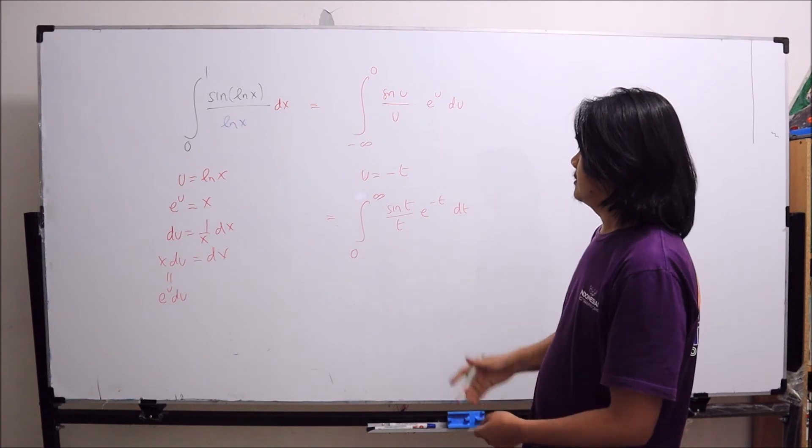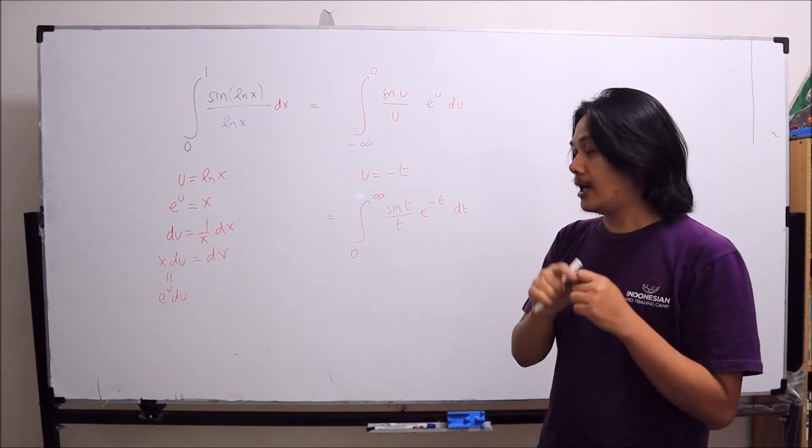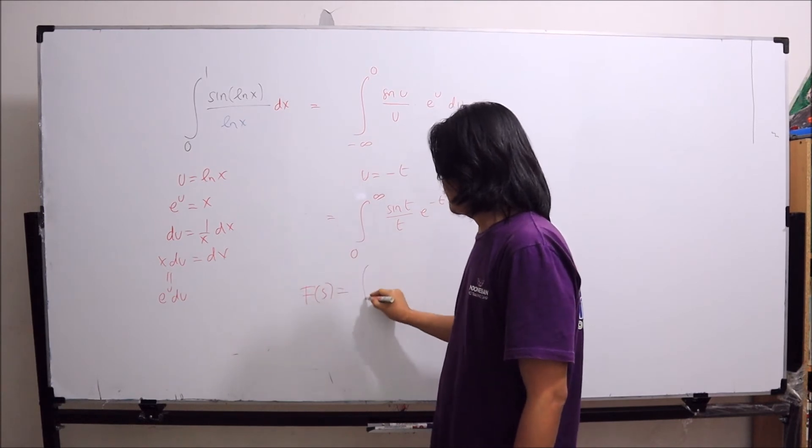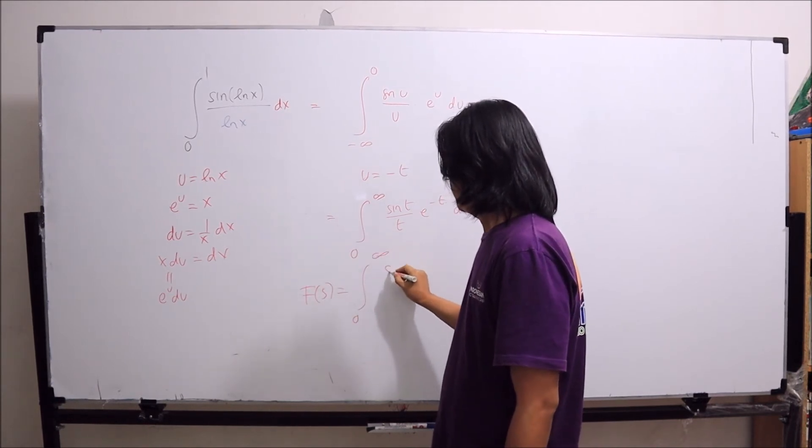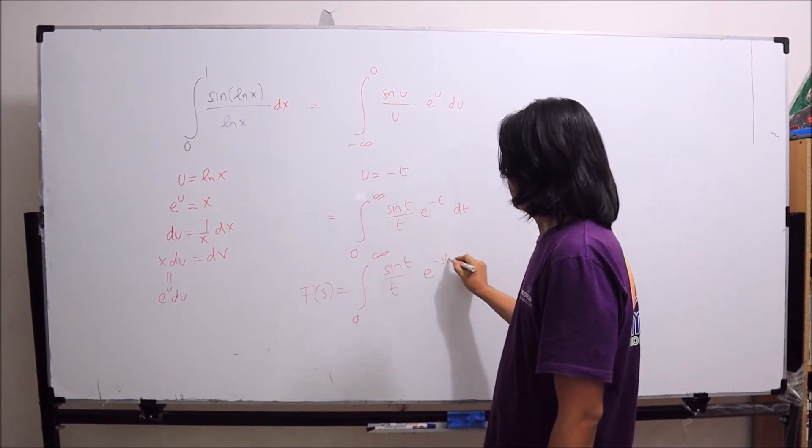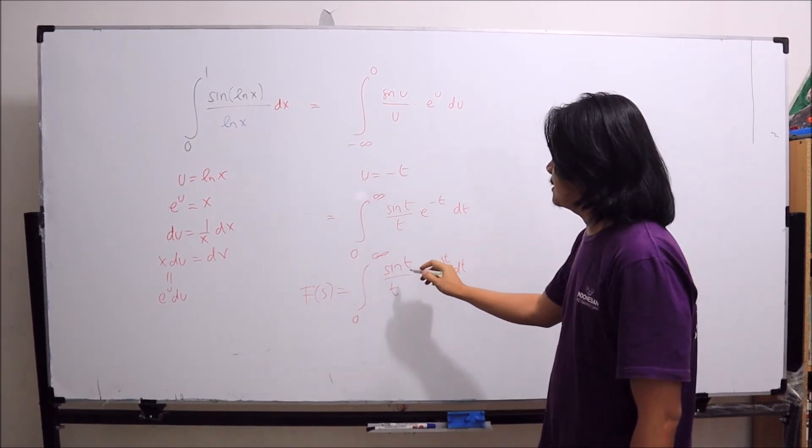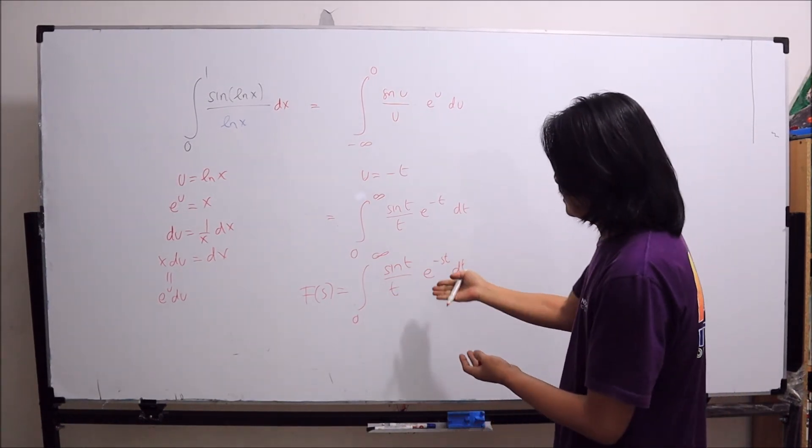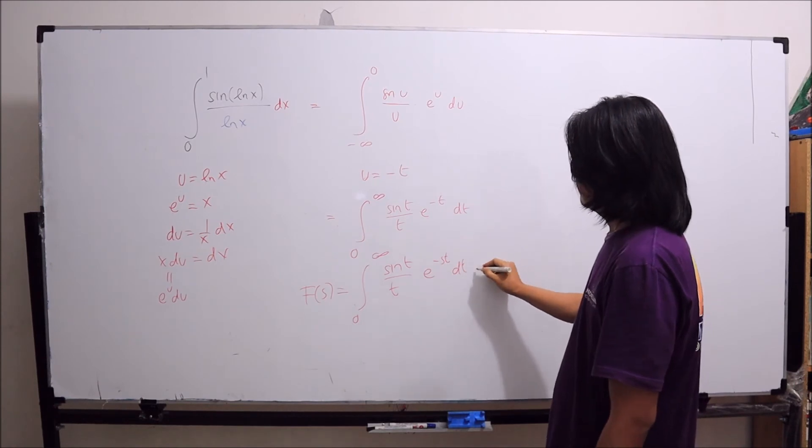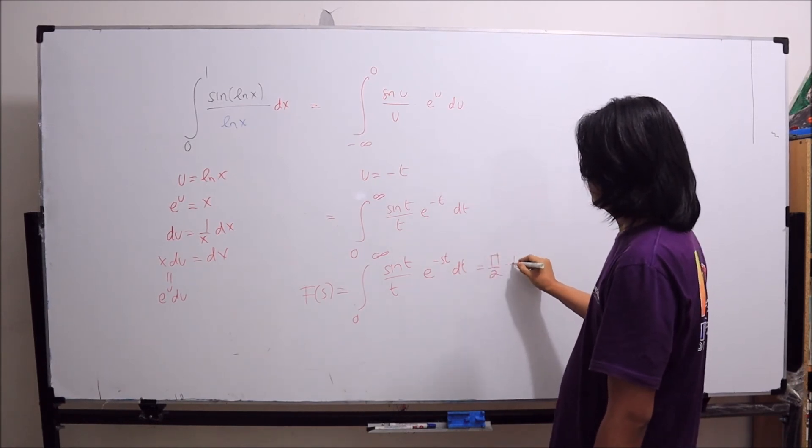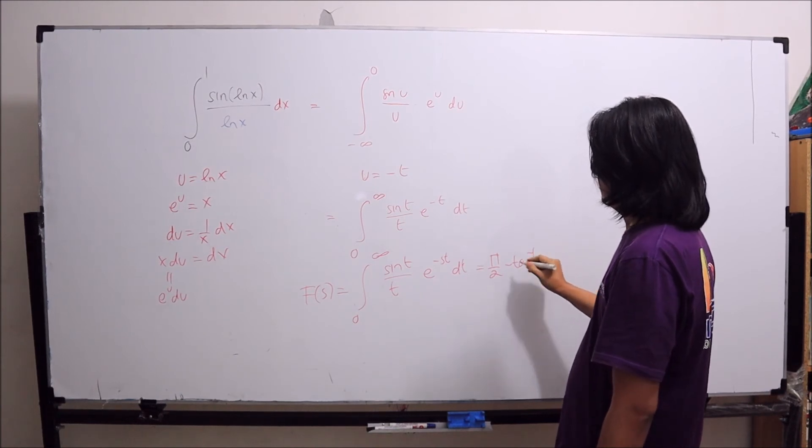We are almost done. The reason is because we know the following integral. This is nothing but the Laplace transform of sin t over t. On another video, I have shown that the result of this is equal to pi over 2 minus arctan s.